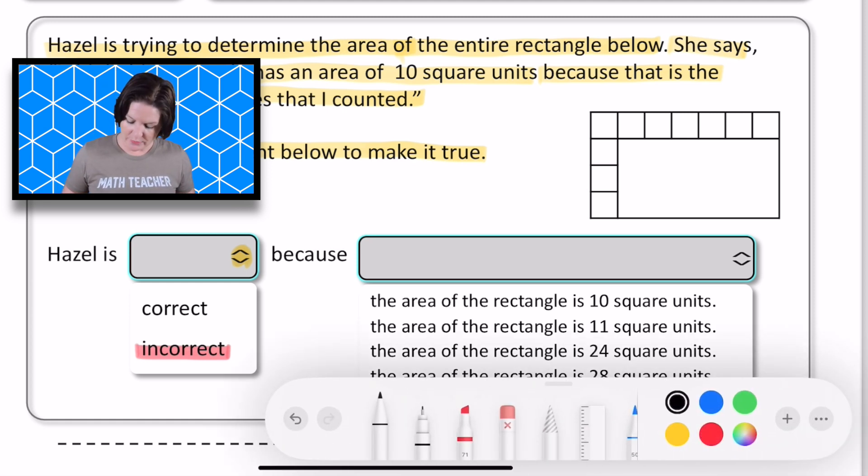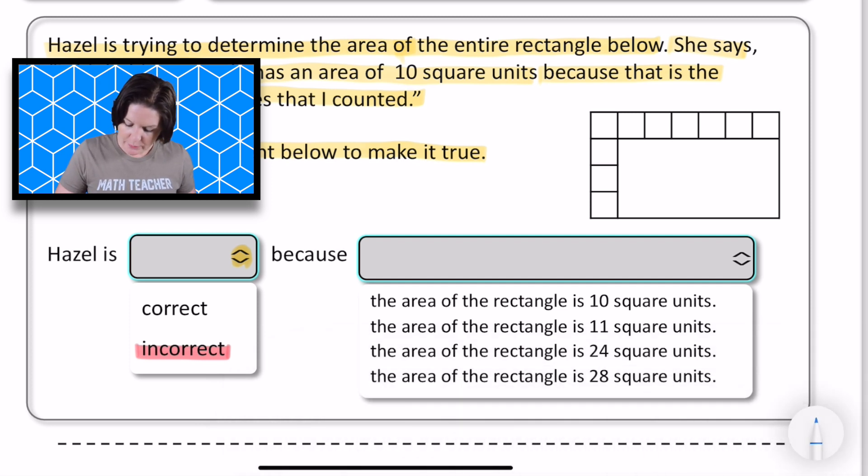And this is what I would have done with this one. I would have gone ahead and taken the lines that were already formed and drawn them down. Okay. And now we have what looks like an array here, which means that we have the same amount in each row.